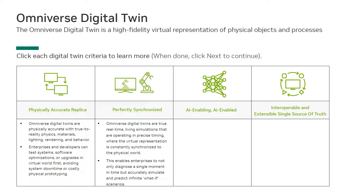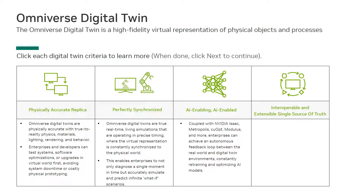Omniverse digital twins are true real-time living simulations operating in precise timing, where the virtual representation is constantly synchronized to the physical world. This enables enterprises to not only diagnose a single moment in time, but accurately simulate and predict infinite what-if scenarios. Coupled with NVIDIA ISAAC, Metropolis, Qopt, Modulus, and more, enterprises can achieve an autonomous feedback loop between the real world and digital twin environments, constantly retraining and optimizing AI models.